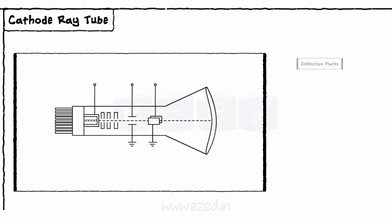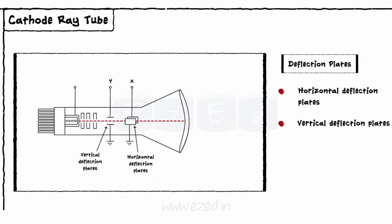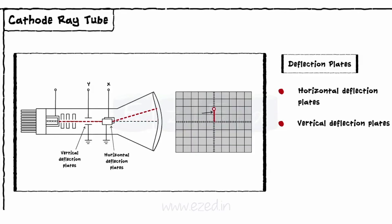The next section is deflection plates. A focused beam with a very high velocity is then passed through X and Y deflection plates. These are nothing but horizontal deflection plates and vertical deflection plates respectively. The forces on both plates are controlled such that the waveform will be displayed on the screen.